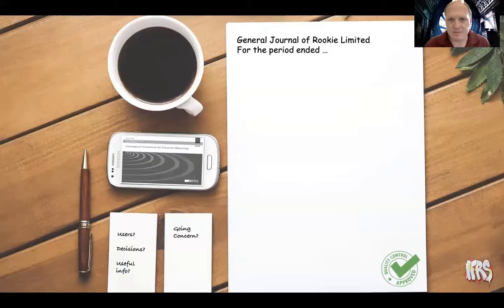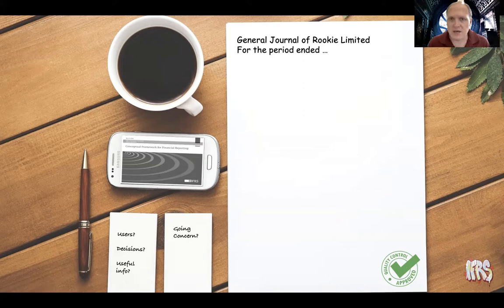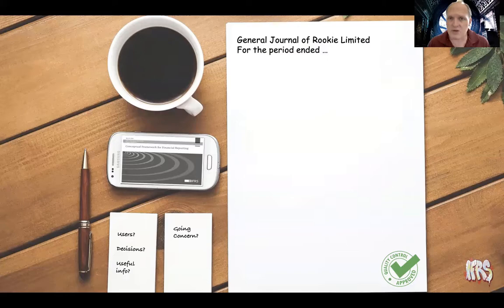So if we come back to our summary of what we've been doing: you're preparing financial information in the form of financial statements for users of that financial information that needs to be useful to them in making their decisions. And now we've got to consider exactly who is that entity — you can't just assume that it's a legal entity. And once we've decided who that entity is that we're reporting on, now we can start writing on this piece of paper. For example, say this is the general journal of Rookie Limited, and for what period we're reporting.